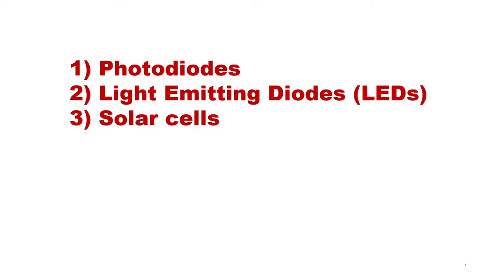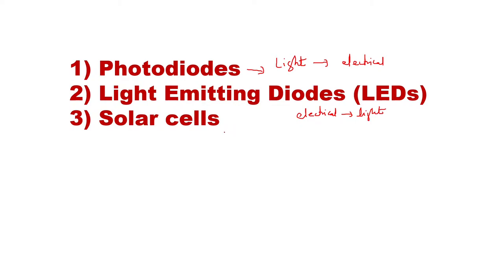Here we are going to study three types of devices. One is the photodiode, which converts light energy into electrical energy. Second, we will have light emitting diodes — LED — which, as the name suggests, converts electrical energy into light energy. And then we have solar cells, which convert light energy from solar radiation into electrical energy.